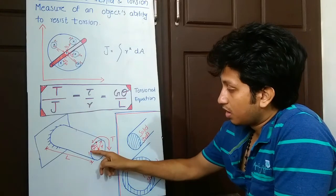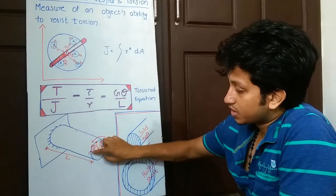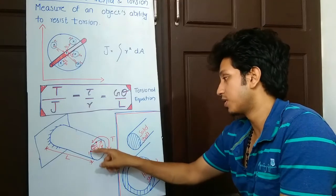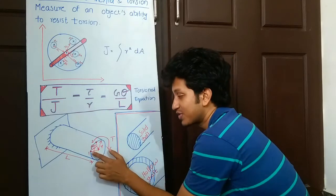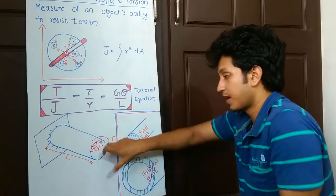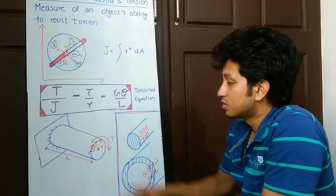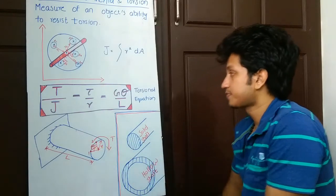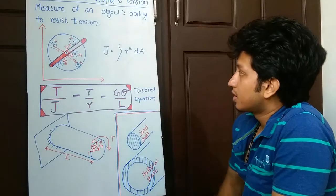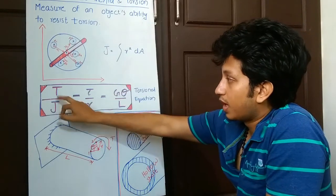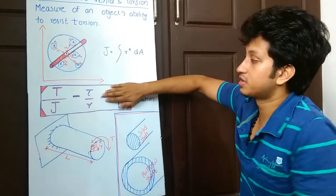Theta is the angle of twist. Angle of twist means if initially this point was here at position 1, after I applied torsion and twisted it, this point reached position 2. That is the angle of twist, theta. G is the modulus of rigidity, L is the length of the shaft. This is the torsional equation, and you can see that polar moment of inertia is here, and this is the torque.